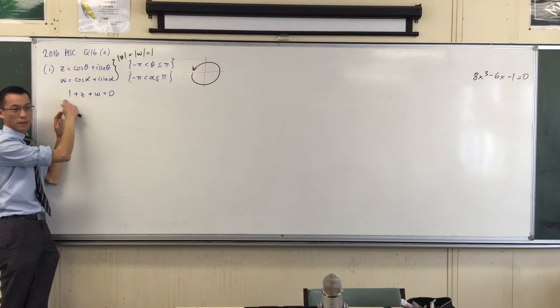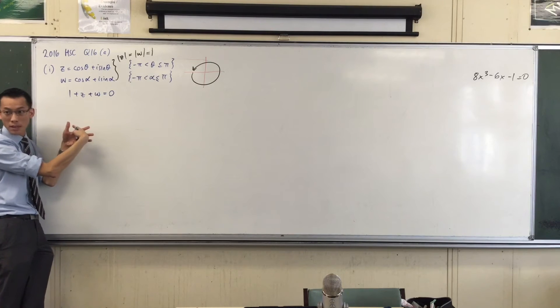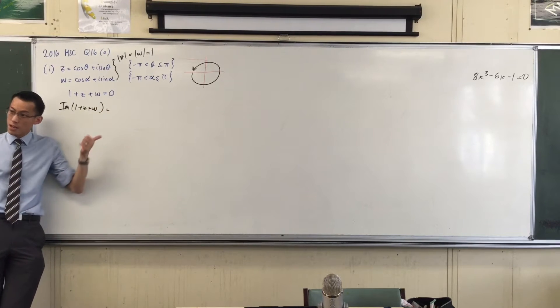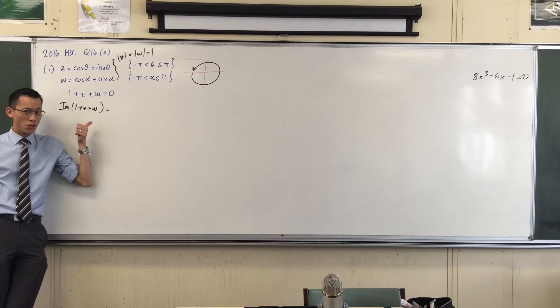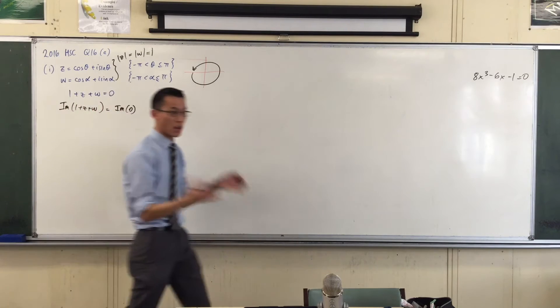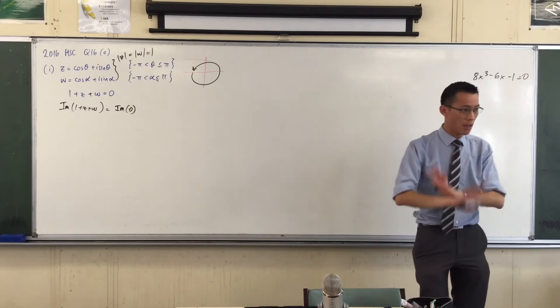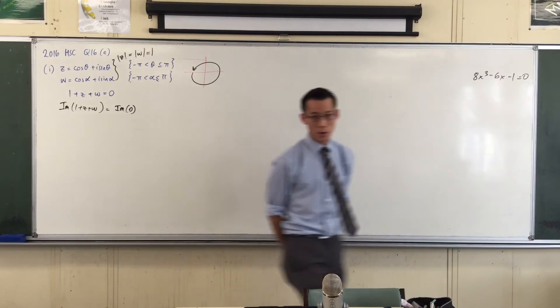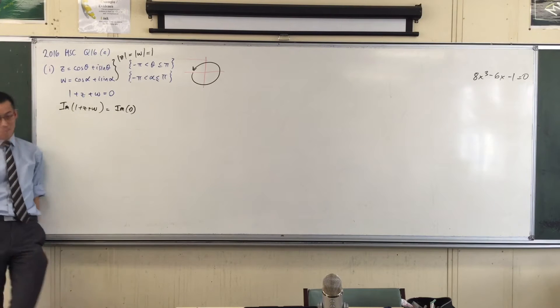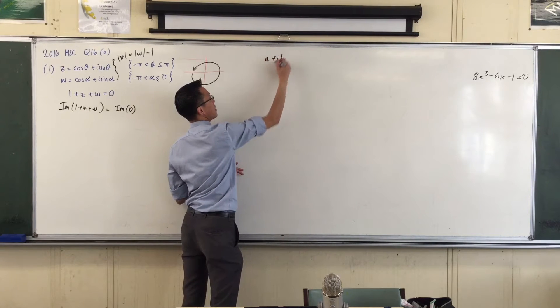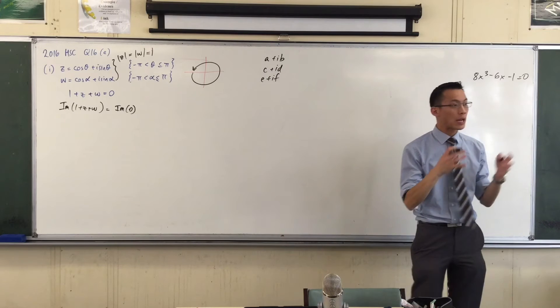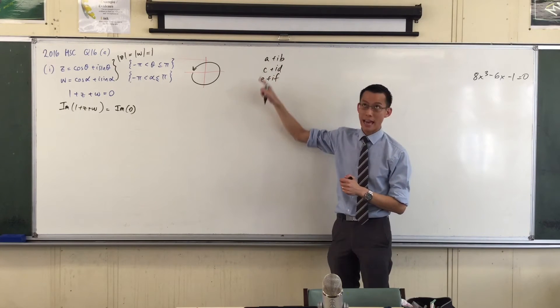These two things are equal—this is three complex numbers added together, which should just be one complex number. If you take the imaginary part of this side, you should take the imaginary part of this side, because this is after all just another complex number at the origin. The imaginary part of this—when you add complex numbers together, you get one big complex number. It would be A plus C plus E for the real part, and IB plus ID plus IF for the imaginary part.